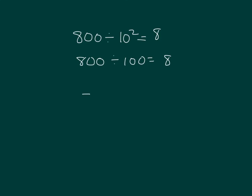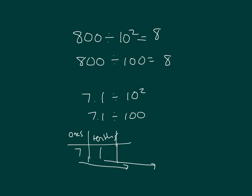Here's another problem. We have 7 and 1 tenths divided by 10 squared. That's 7.1 divided by 100. How many places would it get shifted? Right, 2. So that's into the hundredths place and into the thousandths place.